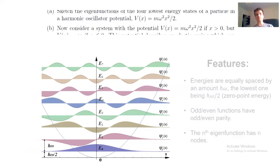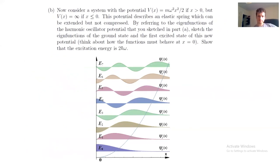Okay, in the second part we have a slightly different system. On the positive side we have exactly the identical harmonic oscillator, but on the negative side we have infinity everywhere. So if you are a wave function and you want to comply with the boundary conditions, you need to vanish when the potential is infinite.